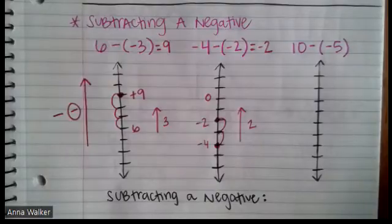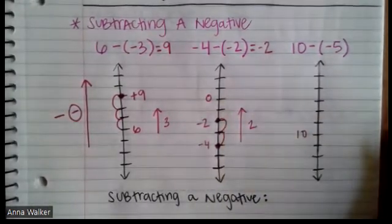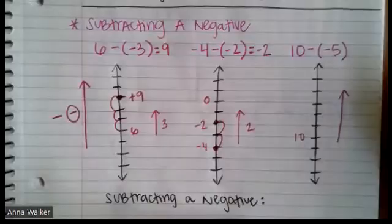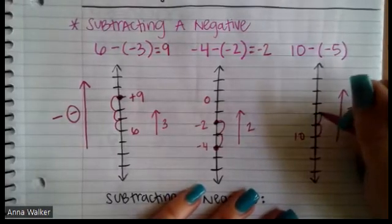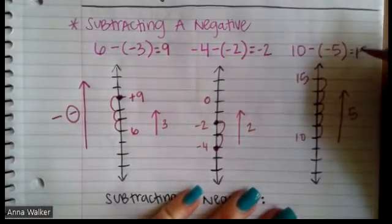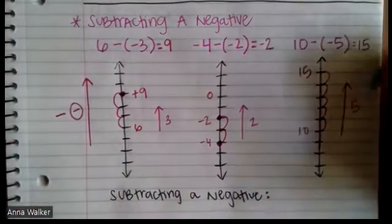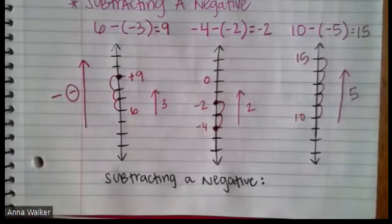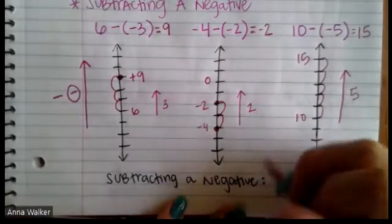One more example: starting at 10, we subtract negative five. Since we're subtracting a negative, we go up the number line five spots: one, two, three, four, five — ending at positive 15. So 10 minus negative five equals positive 15. When we subtract a negative, we are always going to go up the number line.